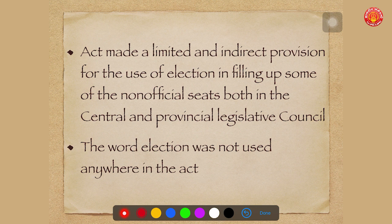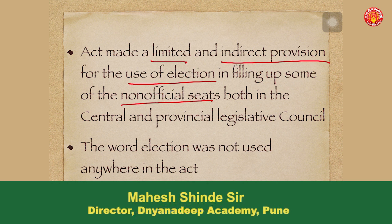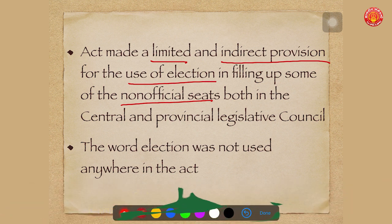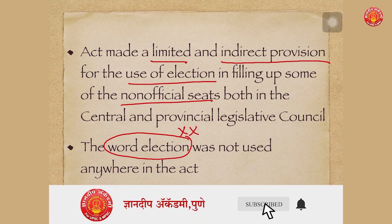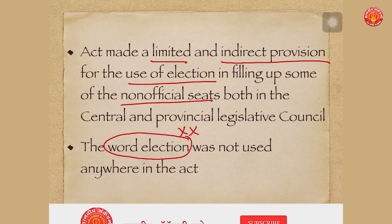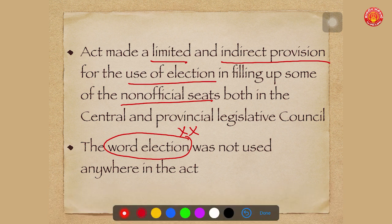The most important thing was that this act made a limited and indirect provision for the use of election in filling up some of the non-official seats in both the Central and Provincial Legislative Councils. However, it was not a direct provision related to election, and importantly, the word 'election' was not used anywhere in this act. Only the word 'nomination' was used — nomination by the Viceroy or nomination by the Governor in the provinces.